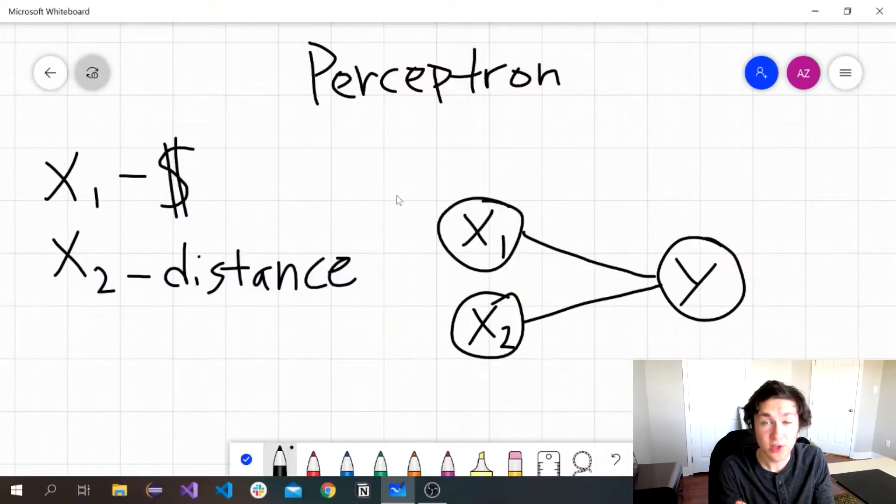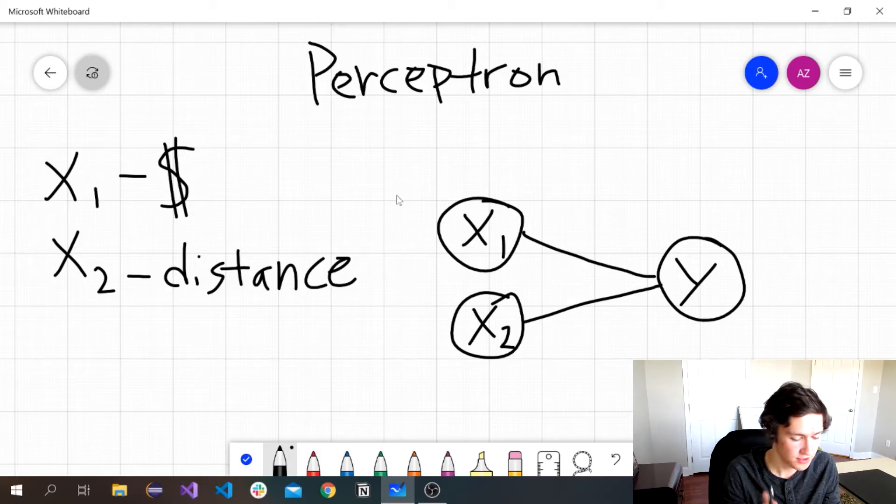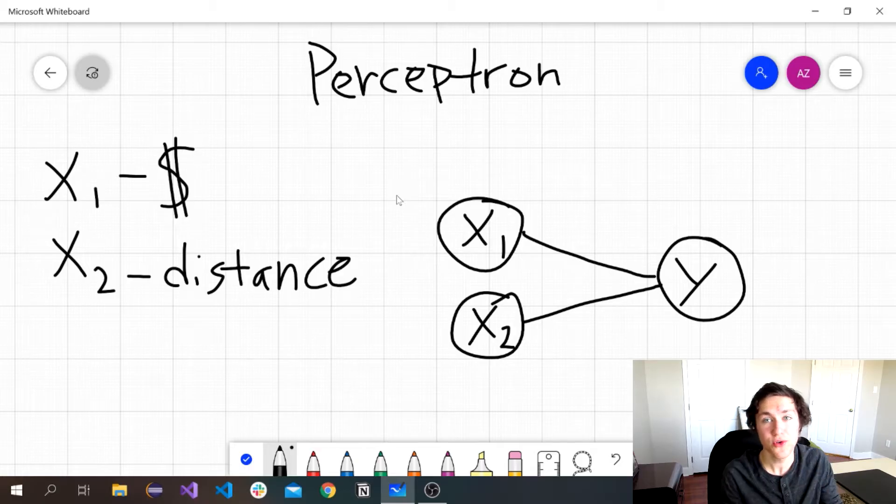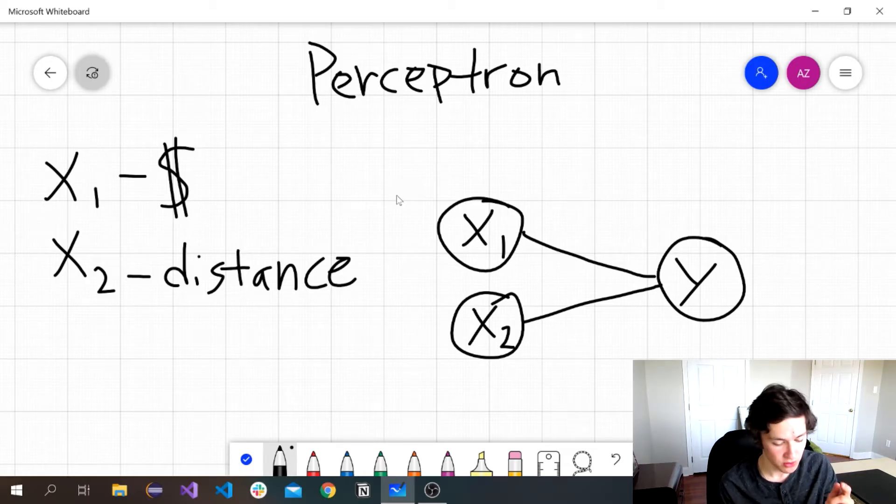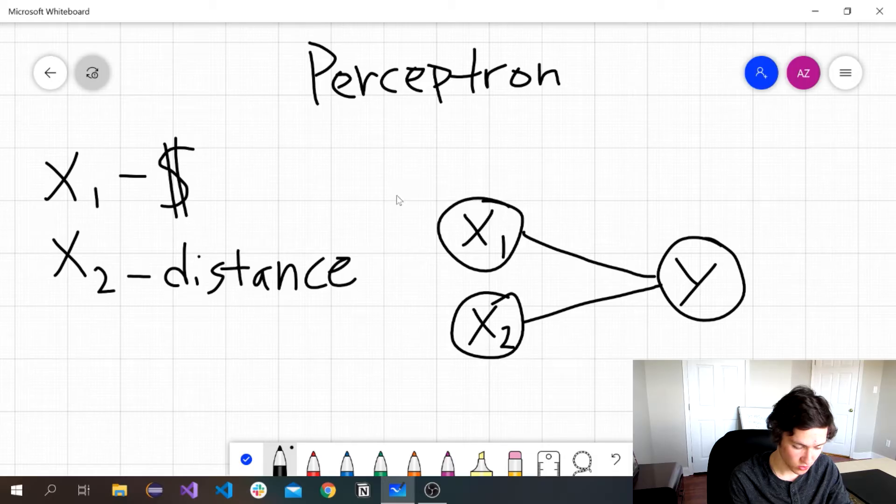Now that we understand the dot product, let's look at an example of how we're going to apply it to a perceptron. Let's say that you're trying to decide whether or not you should go to a certain restaurant tonight. And your two criteria are going to be how much money you have to spend and how far away the restaurant is. So in the context of these problems, those are our inputs. And so now what we need to do is we need to adjust the two weights that these two input neurons are connected to.